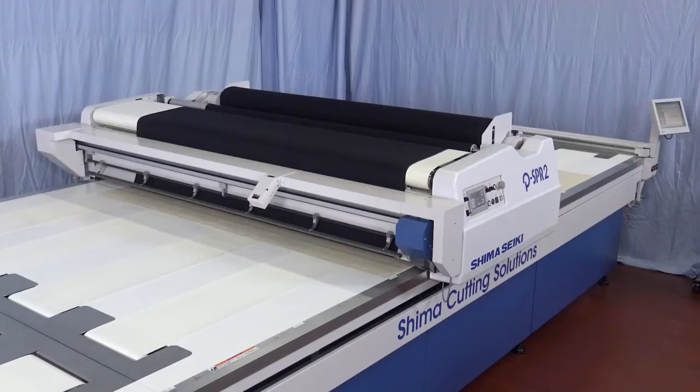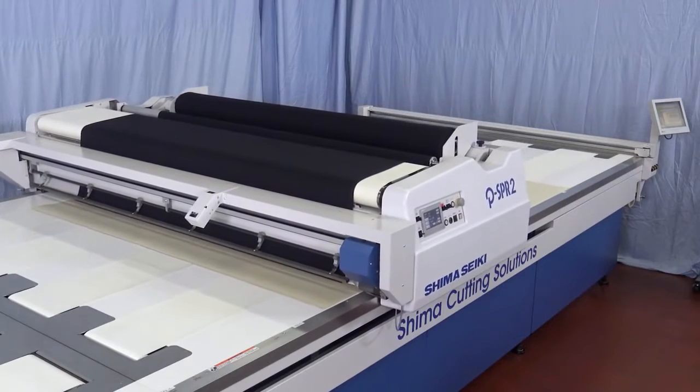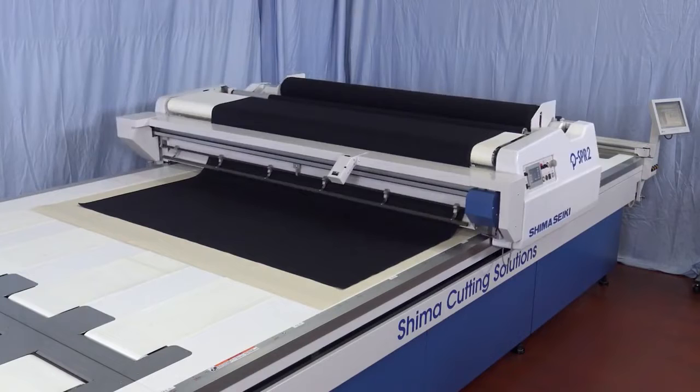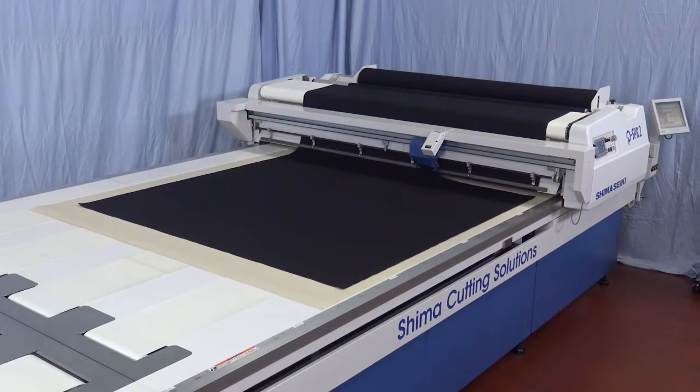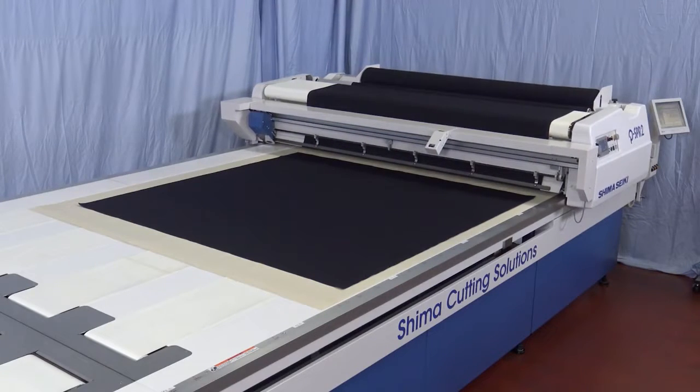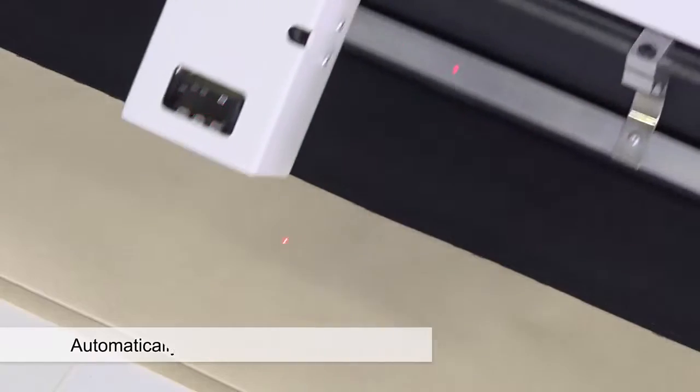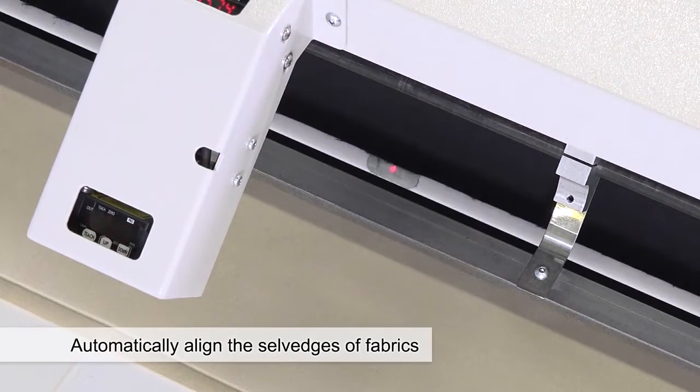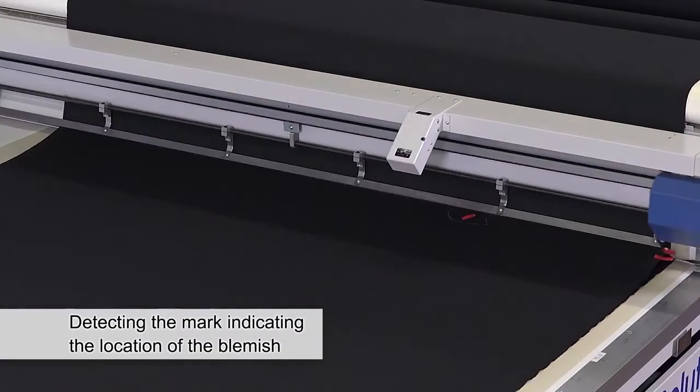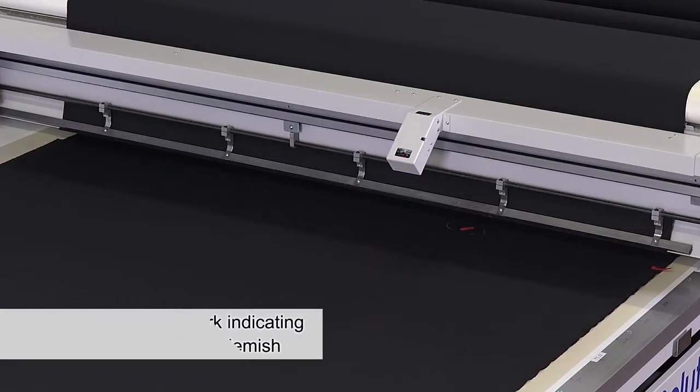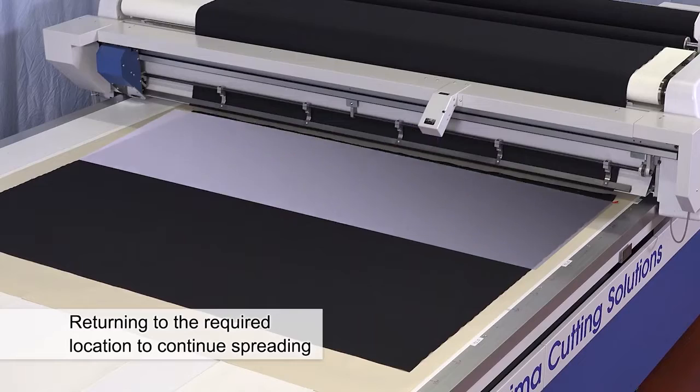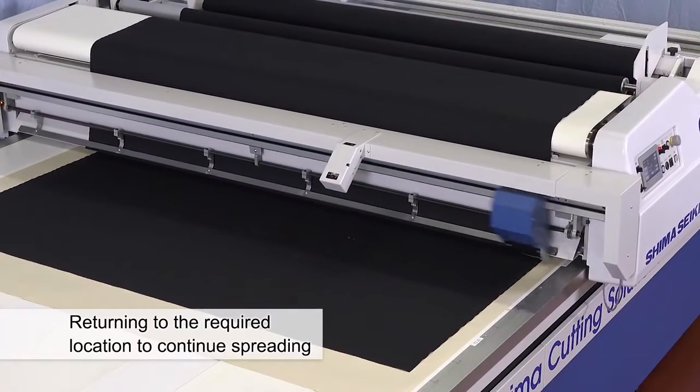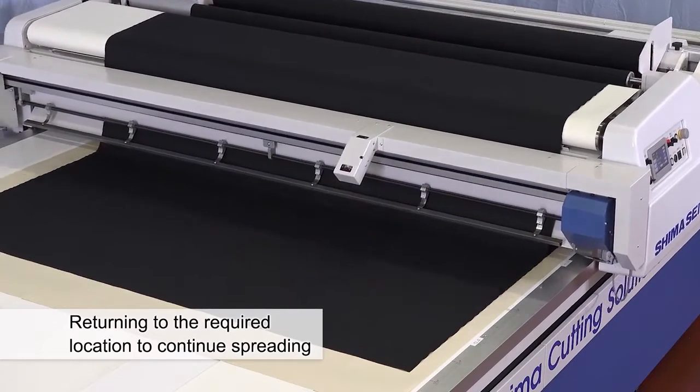PSPR2 is an automatic spreading machine that spreads and stacks fabric to the required length and number of plies. Salvages of the fabrics to be stacked are automatically aligned and spread for optimal cutting. The mark indicating a blemish is detected and avoided. It automatically returns to the required location to continue spreading to prevent the shortage of parts.